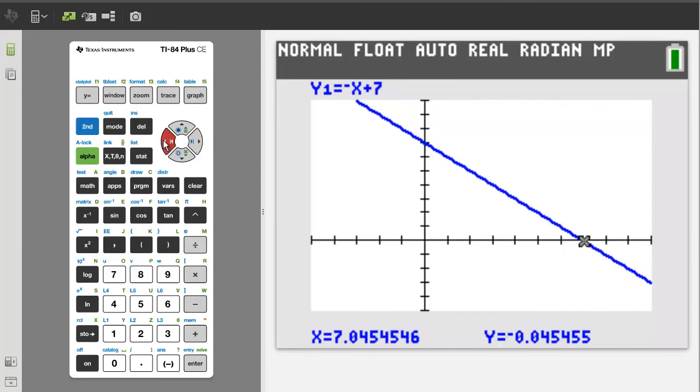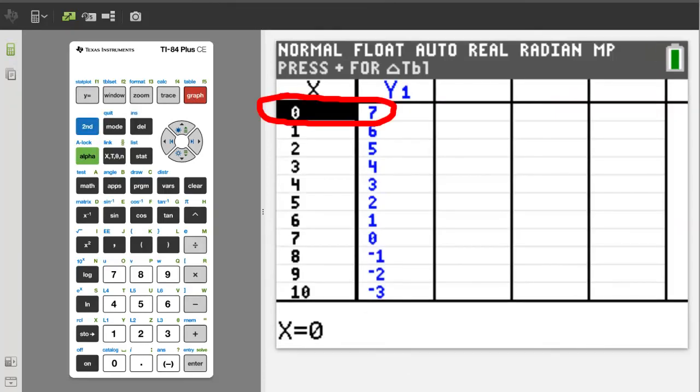We can go to the table to evaluate this line differently. Press the second button, then the graph button. So when x equals 0, y does equal 7 and when y equals 0, x equals 7.